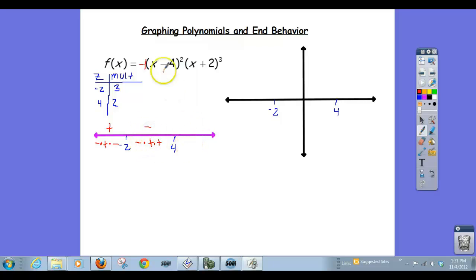And now I'll plug in 5. So again, that negative comes right from there. 5 minus 4 is 1 squared is a positive. And 5 plus 2 is 7 cubed is a positive. So I have a negative times a positive times a positive, which is a negative.